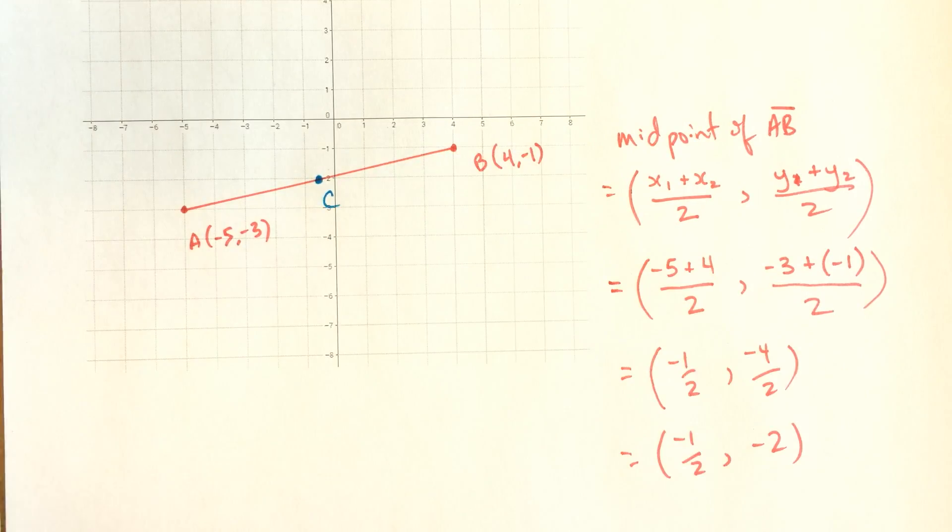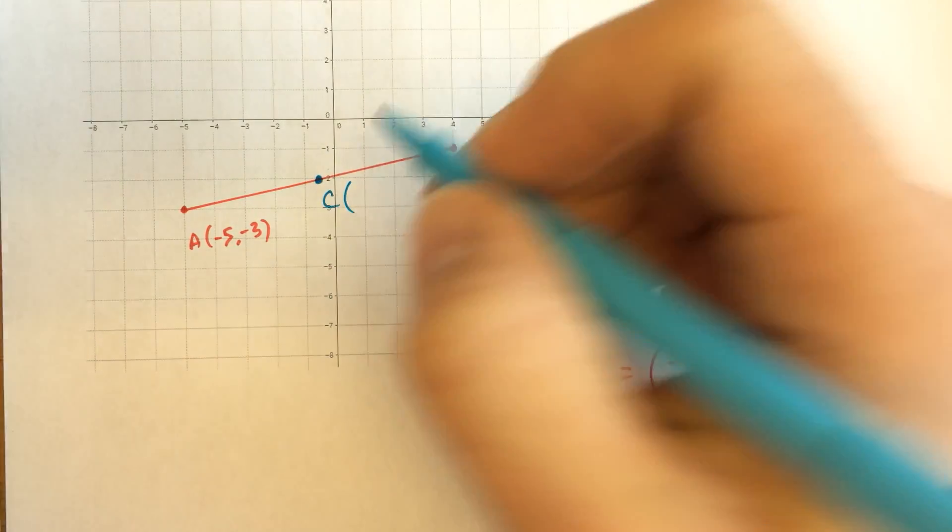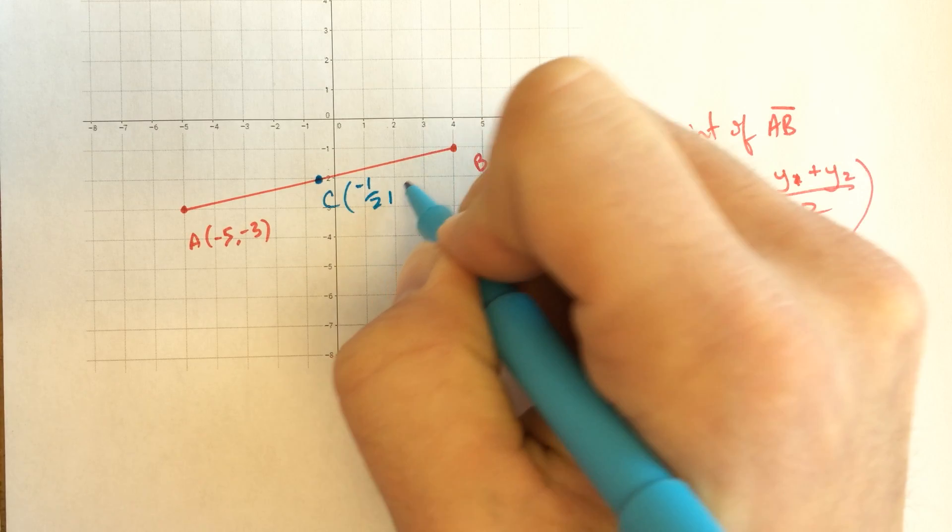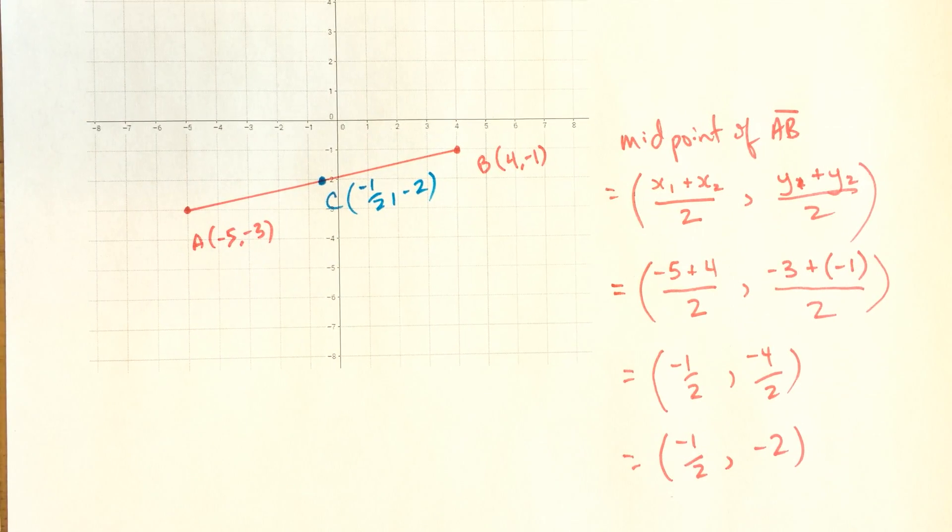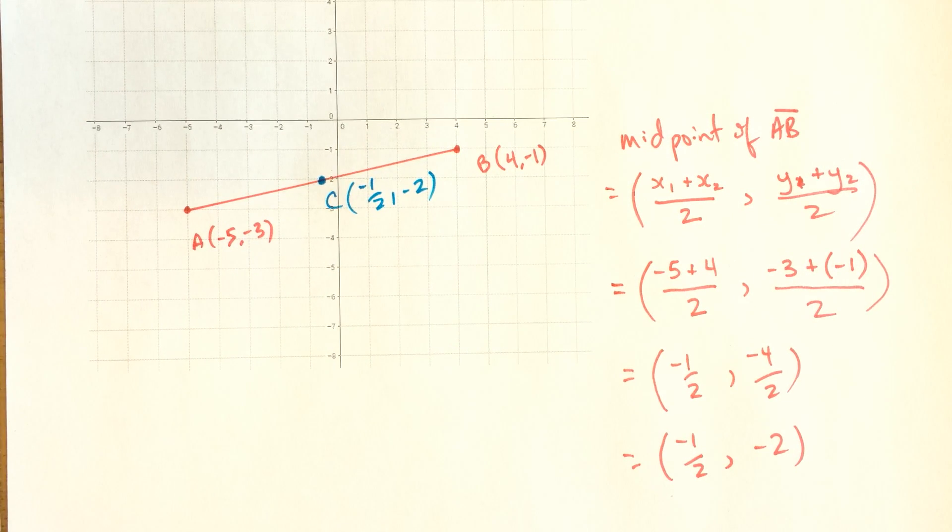And sometimes we'll label that with a point name like C. Let's call that C. And there is the midpoint of the line segment AB. Thanks.